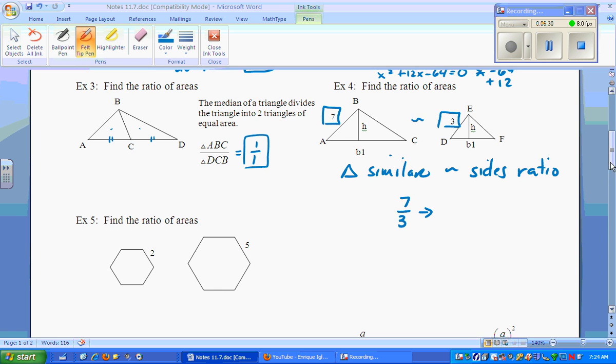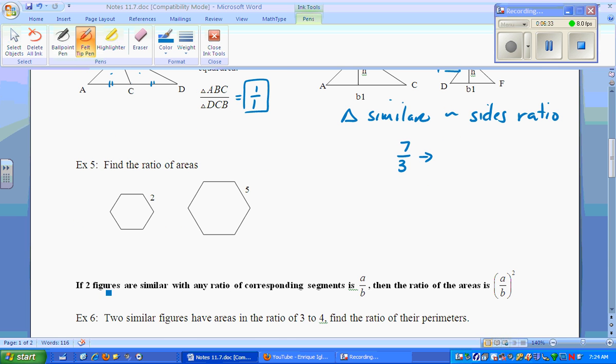How do we get the area ratio? Well, it takes us to this line right here. If two figures are similar with any ratio correspondence of A to B, then the ratio of areas is you take that A to B, and what do you do with it? You square it. So we're saying that these two triangles are similar. They're in a ratio of 7 to 3. So what do you do? You take that 7 over 3 and you square it. Well, 7 squared is 49. 3 squared is 9. Does it simplify? Nope. Leave it as 49 over 9.